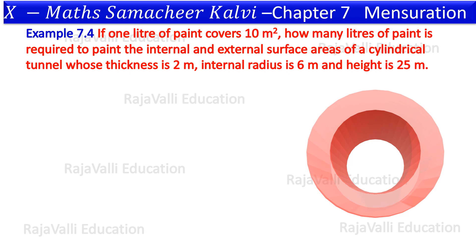Example 7.4. If 1 liter of paint covers 10 meters square, how many liters of paint is required to paint the internal and external surface areas of a cylindrical tunnel whose thickness is 2 meters, internal radius is 6 meters, and height is 25 meters.